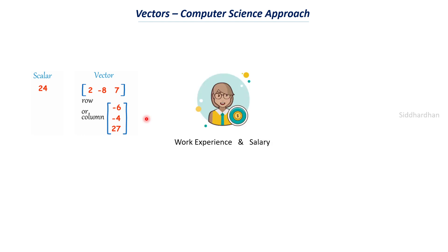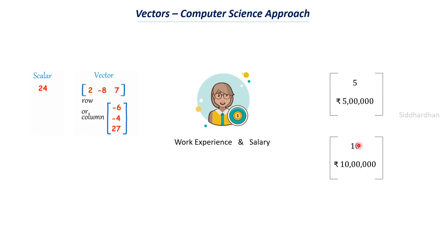Consider a machine learning problem: predicting a person's salary based on work experience. The dataset contains years of experience and corresponding salary. For example, a person with 5 years of experience earns 5 lakhs per annum — this is one vector. Another with 10 years earns 10 lakhs per annum — another vector. A dataset might have 100 such data points, each representing one vector. When all these vectors are combined together, we get a matrix.